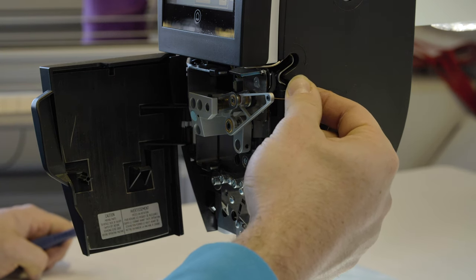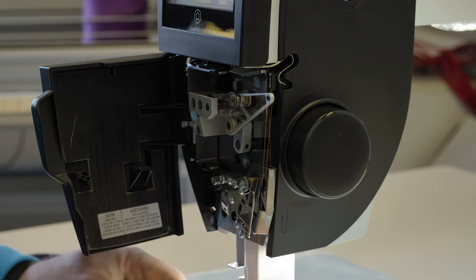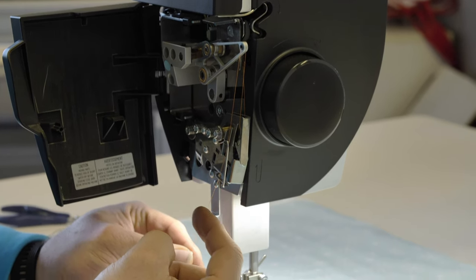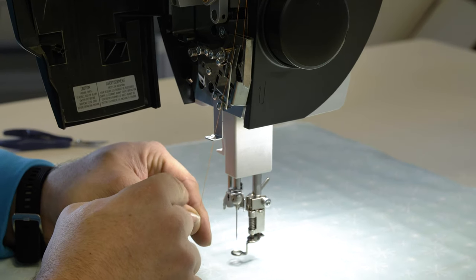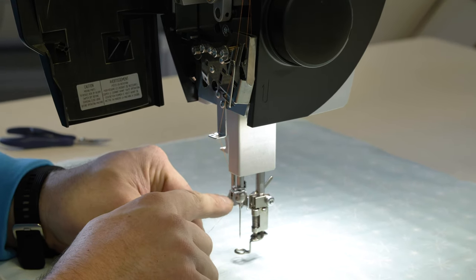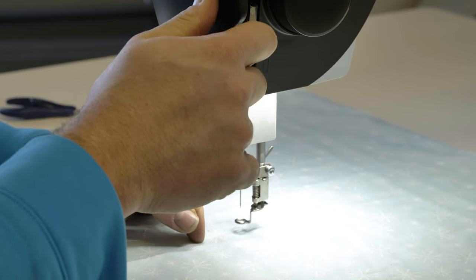We're going to go through the take-up lever, back to front. We're going to go down behind this guide and through the guide. Then we're going to go through the guide above the needle. Now we can shut our door.